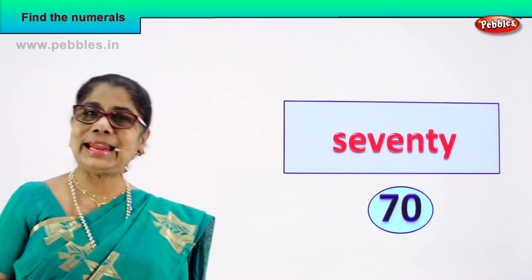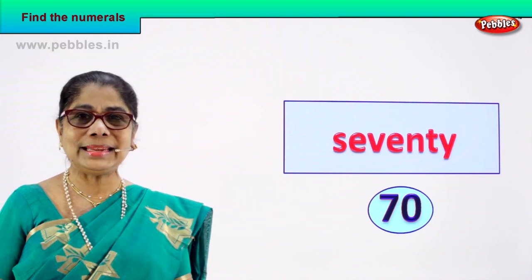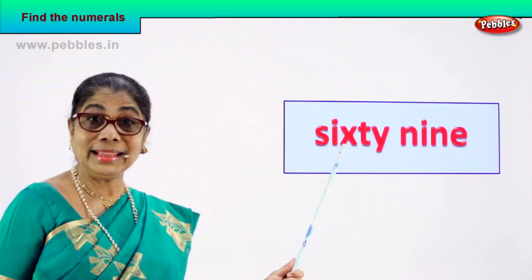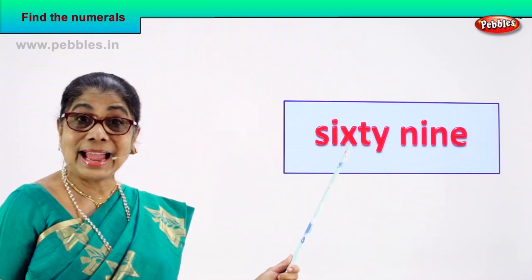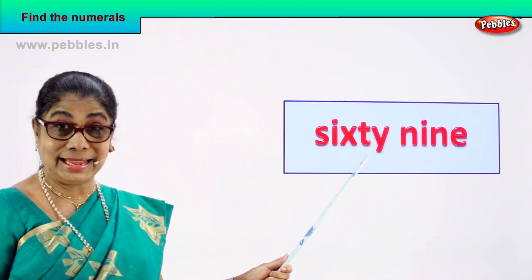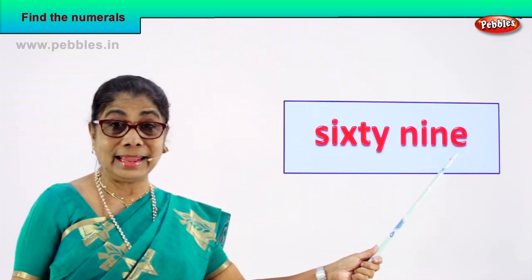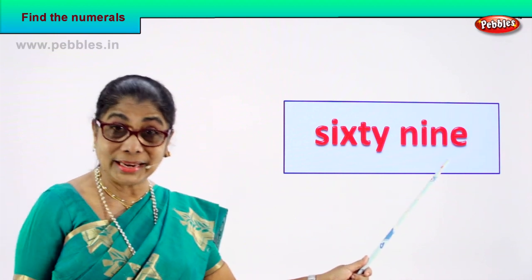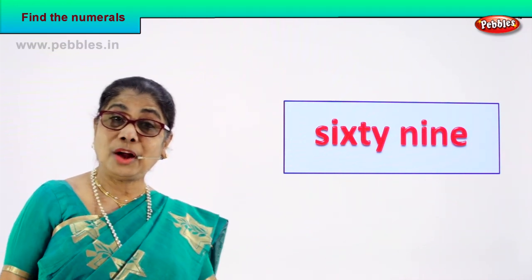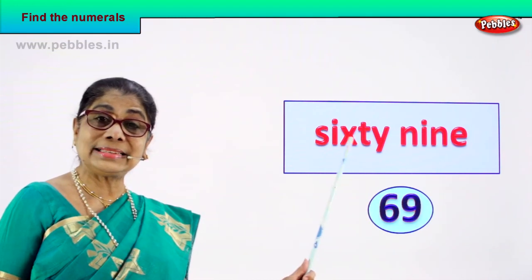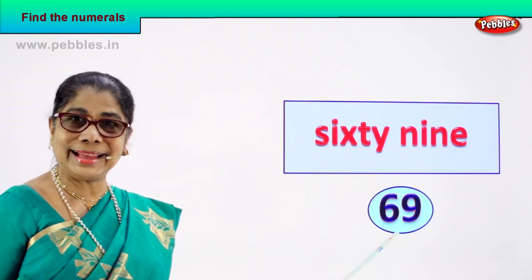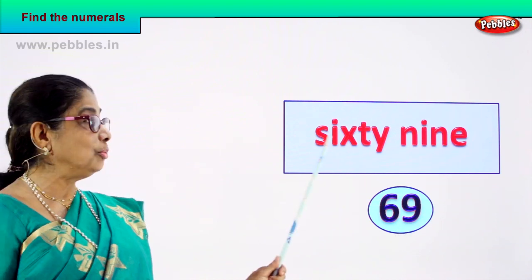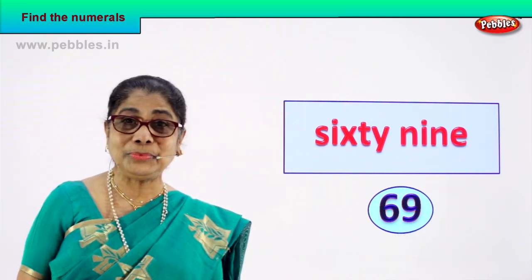Let's take another number name. Isn't it a nice exercise? Good. Read out: S-I-X-T-Y, sixty, N-I-N-E, nine — 69. How do you write the numeral? 6 and 9 — 69. 6 and 9 — 69 is the numeral for this number name. Good. Shall we go to our next number name? Are you enjoying the exercise?